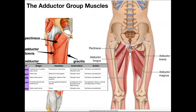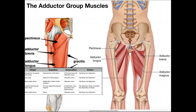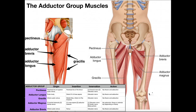Those are our three superficial muscles of the adductors. If we were to take those three off — particularly the pectineus and the adductor longus — we would better be able to see the two deeper adductors, which are the adductor brevis and the very large adductor magnus. Let's go take a look at those.